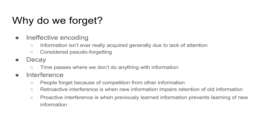In terms of why we forget, the first reason is ineffective encoding. Encoding is the process of taking information from short-term memory and putting it into long-term memory. Ineffective encoding is where information is never really acquired — this often happens because we're simply not paying enough attention. Someone may be talking while you're on your phone nodding along, but you're not actually receiving that information. This is why we call it pseudo-forgetting, because you never really acquired or encoded it in the first place.